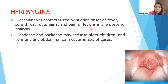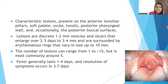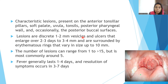Herpangina is characterized by sudden onset of fever, sore throat, and dysphagia — parents may bring the child saying the child is not eating well or there is drooling of saliva. There are painful lesions in the posterior pharynx. Headache and backache may occur in older children, and vomiting and abdominal pain in around 25% of cases. Characteristic lesions are present on the anterior tonsillar pillar, soft palate, uvula, tonsils, posterior pharyngeal wall, and occasionally the posterior buccal surfaces. Discrete one to two millimeter vesicles enlarge over two to three days to three to four millimeters with an erythematous halo, sometimes up to 10mm. Fever lasts one to four days and symptoms resolve in three to seven days.